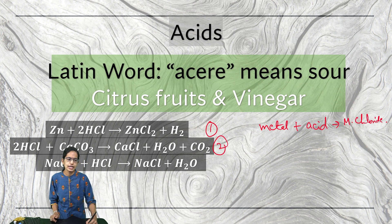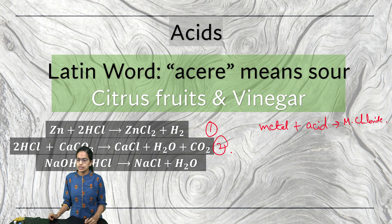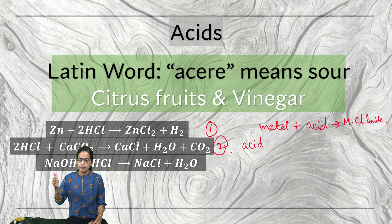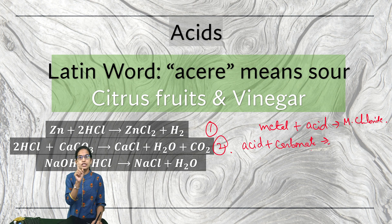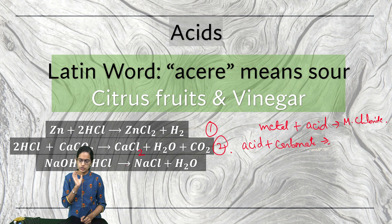The next important reaction is acid reacting with carbonates. Using calcium carbonate (CaCO₃) as the carbonate, when acid reacts with carbonate, salts are formed. So CaCl₂, water, and carbon dioxide are released.